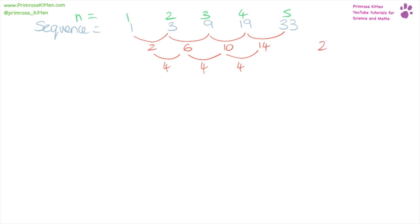Between 10 and 14 we have four. So this tells us, because we've had to go down to a second row, that it is going to be n squared. And because it is four on the second row, that gives us two n squared.